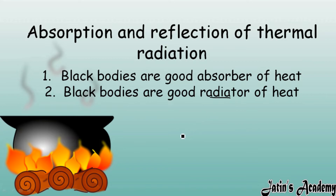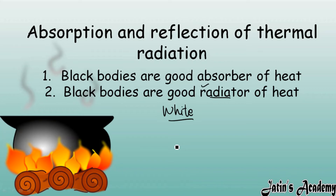Black bodies are good absorbers as well as good radiators of heat. Hot bodies always give out heat radiation. Black bodies act like good radiators — they radiate or give out heat to the environment very easily. White bodies, in contrast, are very poor radiators of heat — they just reflect back the heat rather than emitting heat radiation outward. So black bodies are good radiators and white bodies are poor radiators of heat.